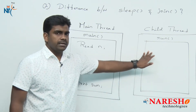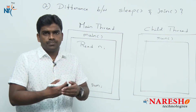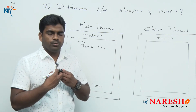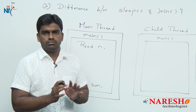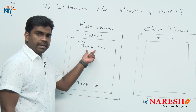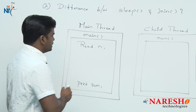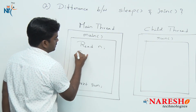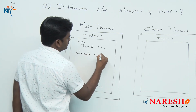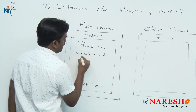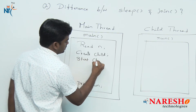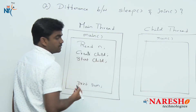The child thread is responsible for calculations, and the main thread is responsible for reading the input as well as printing the output. So, as soon as we read that N value, we are creating a child thread and starting that child thread.